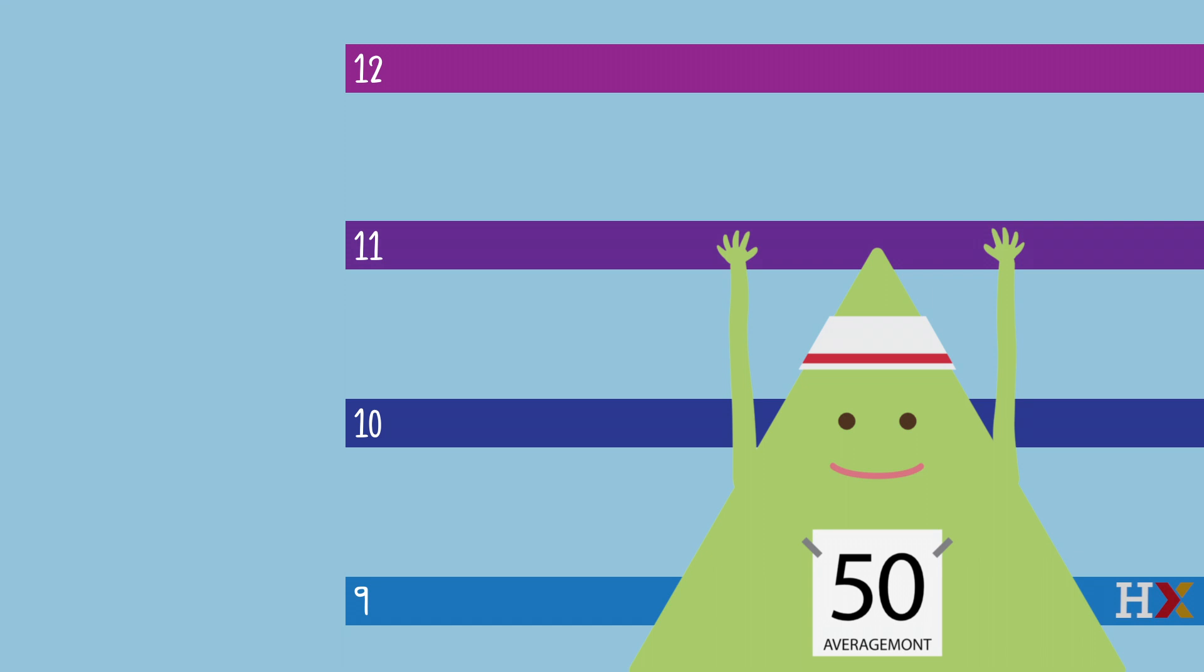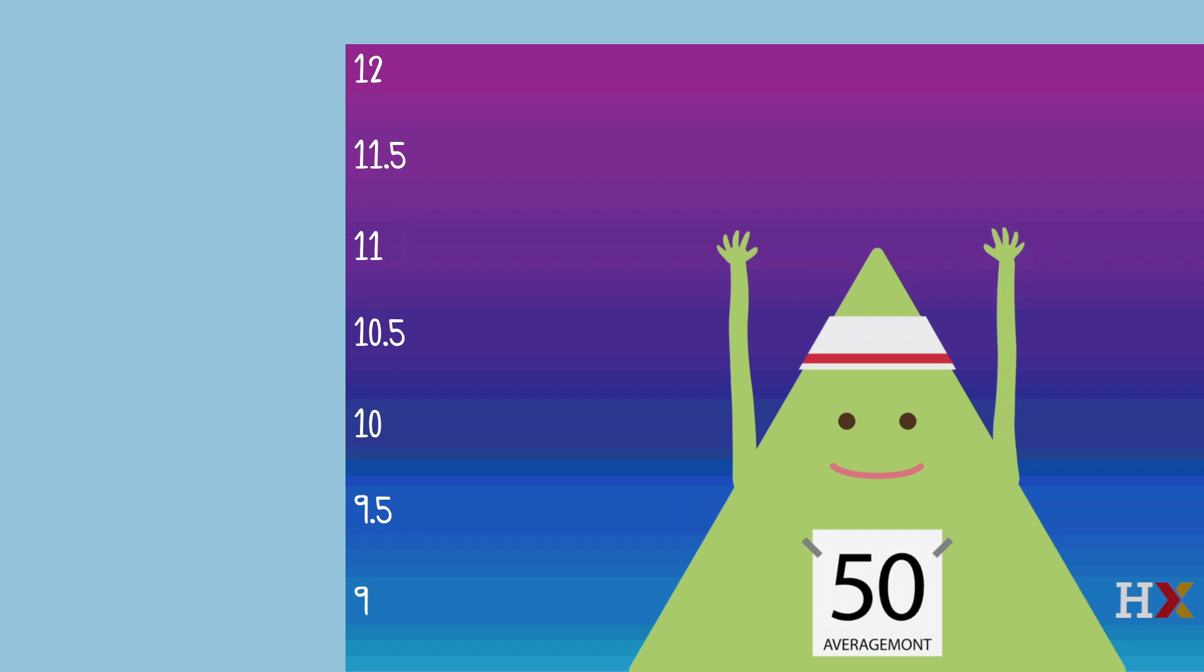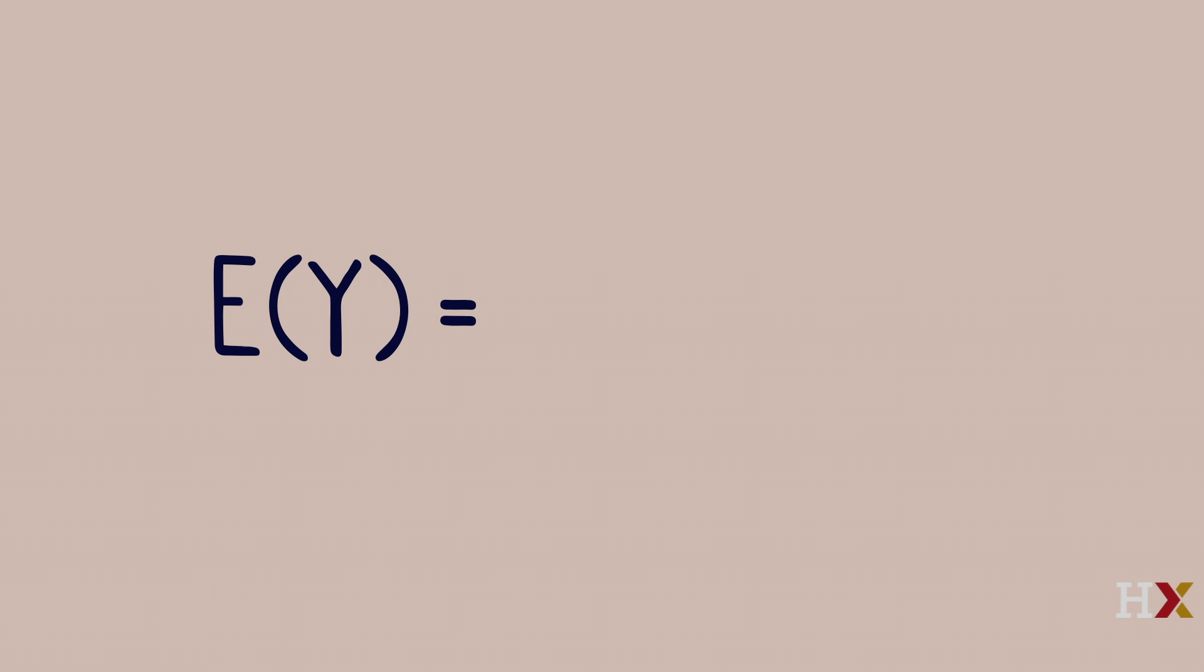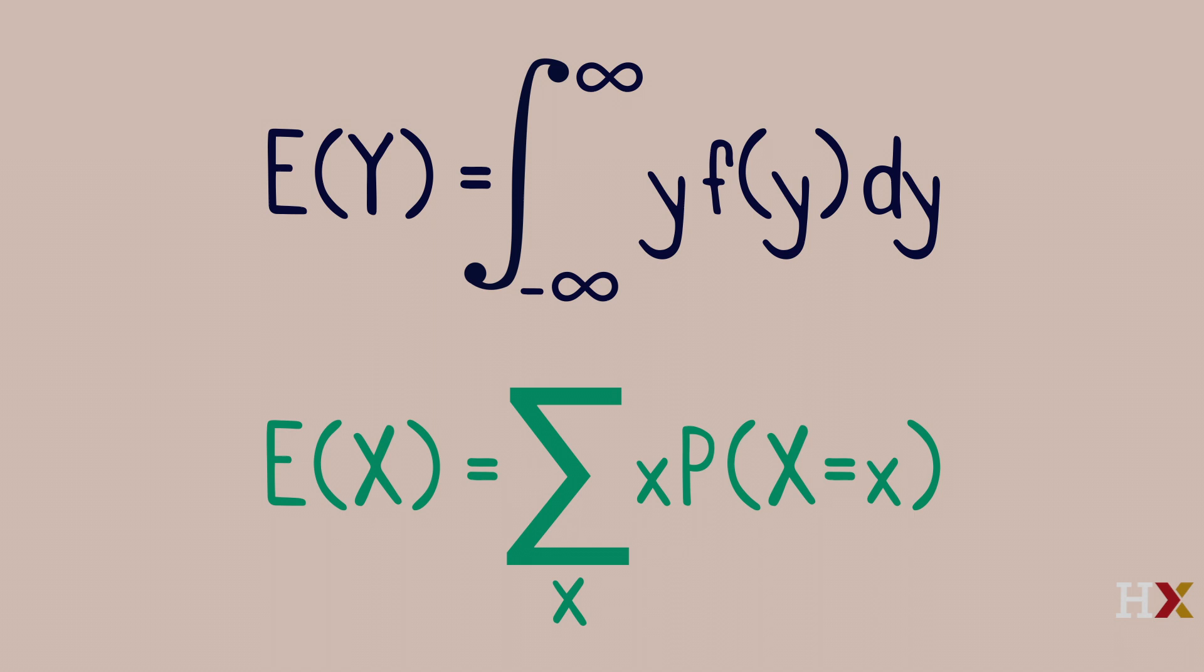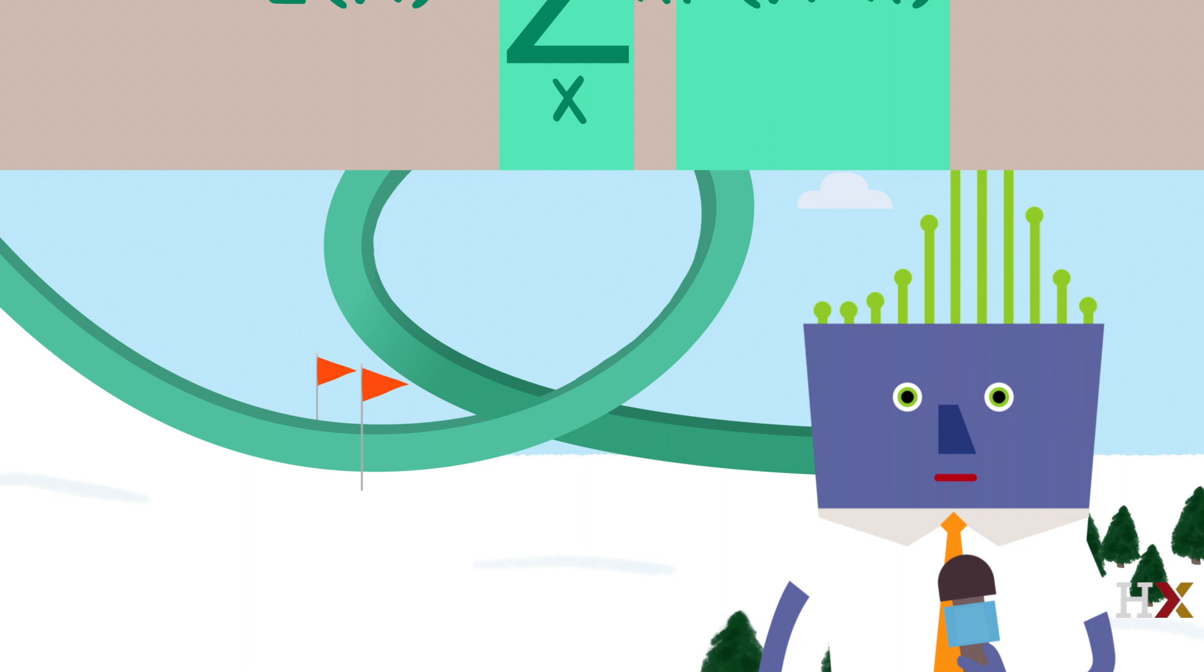If we imagine more and more bars being filled in, the discrete random variable measuring which bar was reached becomes a better and better approximation to the continuous random variable measuring the height that John reached. It then makes sense to define the expected value of a continuous random variable Y as the integral of Y times the probability density function of Y, from minus infinity to infinity. This is analogous to the expected value of a discrete random variable, with an integral in place of a sum and a PDF in place of a probability.